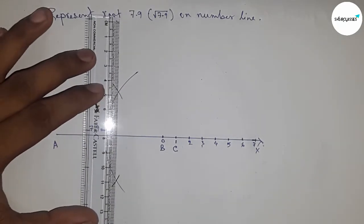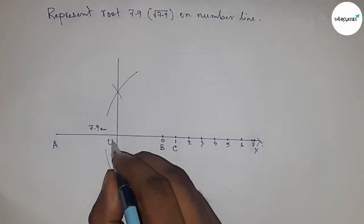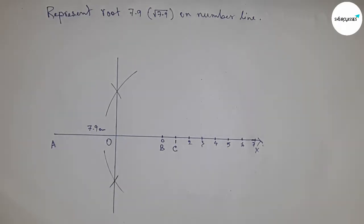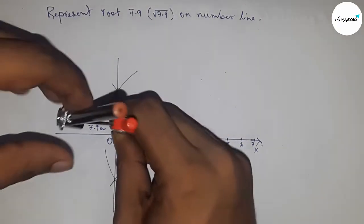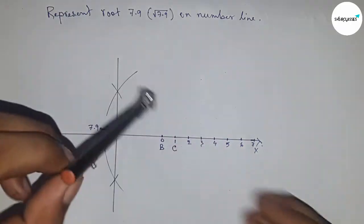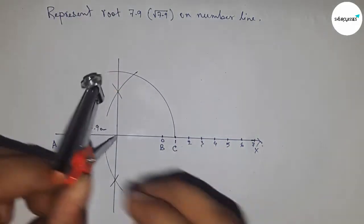Now taking the distance OA and OC to draw a semicircle.